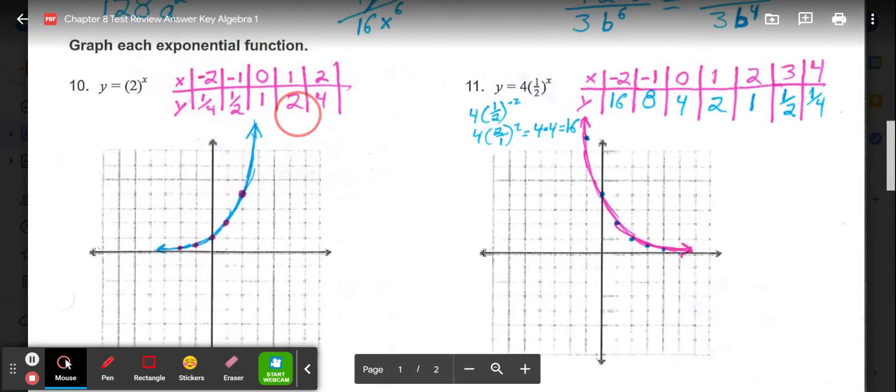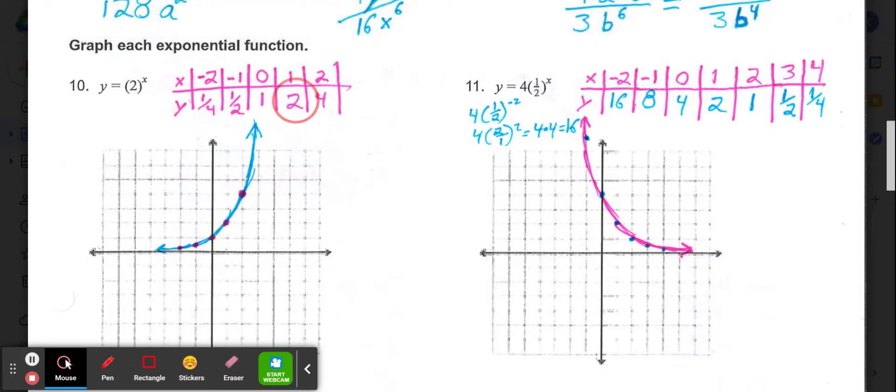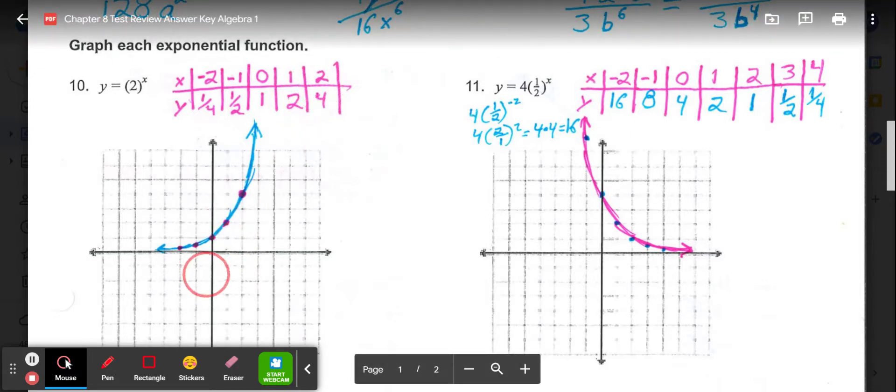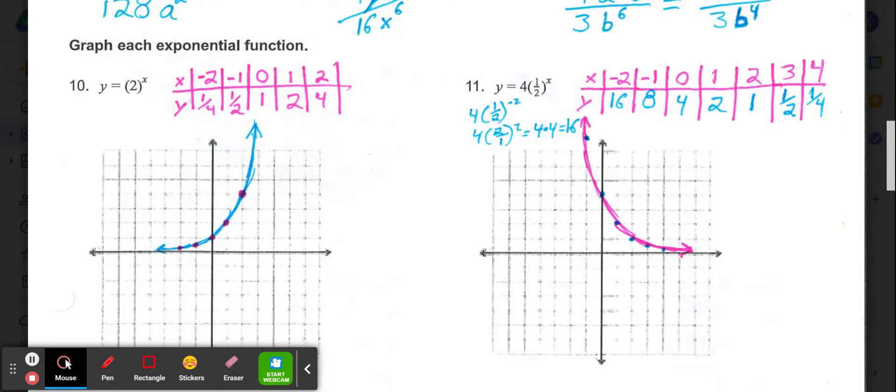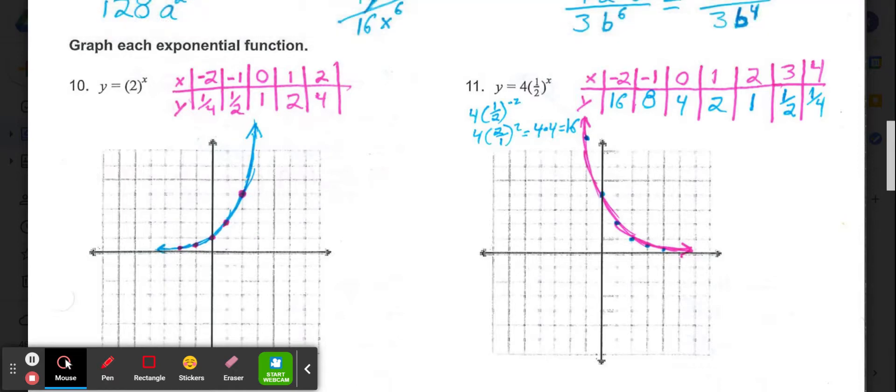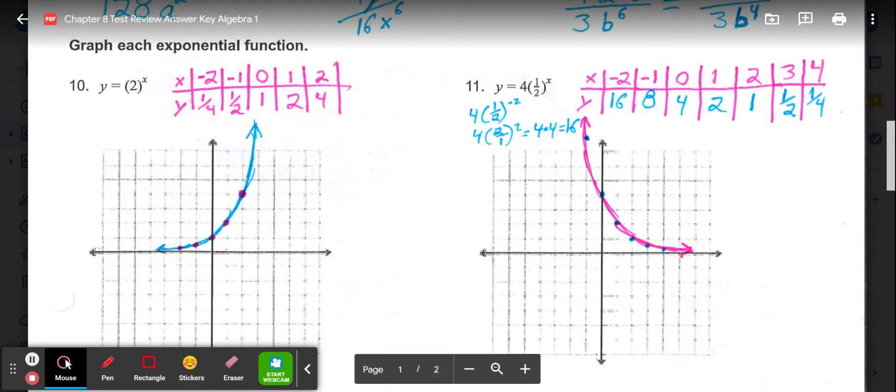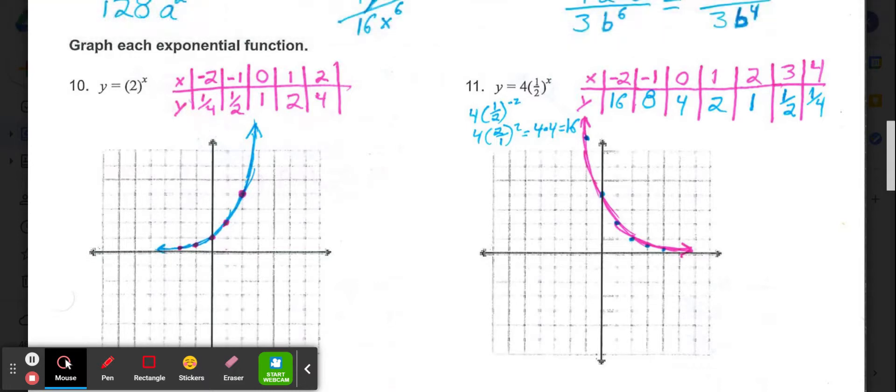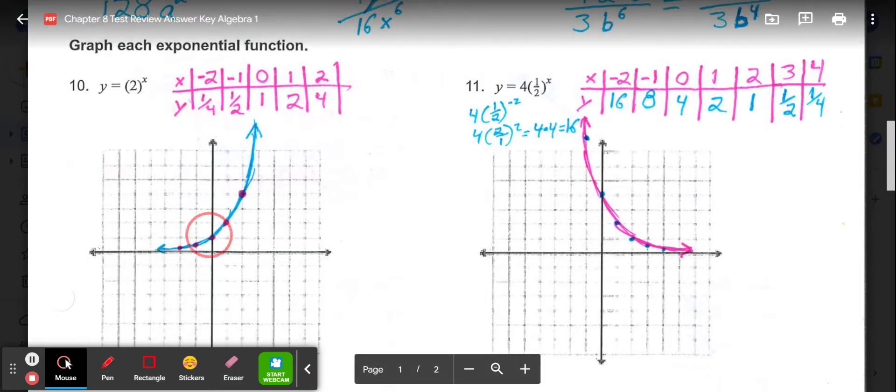2 to the 1st power is 2, so over 1, up 2. 2 to the 2nd power is 4, over 2, up 4. Then dealing with our negatives, 2 to the negative 1st is 1 half, so we'd go left 1, up 1 half. And then 2 to the negative 2nd is 1 fourth, so we'd go left 2, up about 1 fourth. And then connect your dots the best you can to draw in your curve.